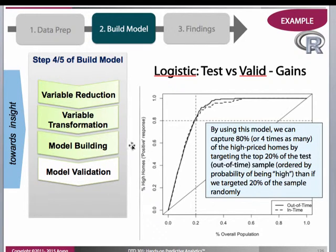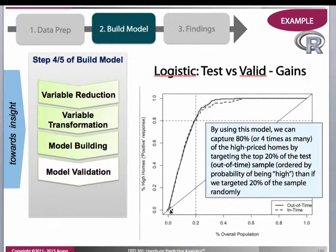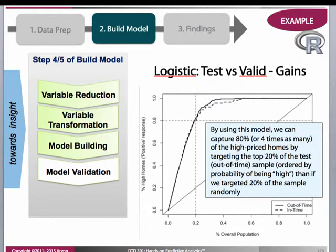If we target the top 20 percent of the test sample ordered using predictions — which are the probability of a home being high-priced — we would capture 80 percent, or four times as many, of the high-priced homes versus targeting a random 20 percent of the sample, which corresponds to the 45-degree line. This lift curve is very useful for characterizing how good a model is versus not using a model, and it'll be even more useful in your bank model framework since it's a marketing dataset.